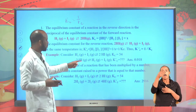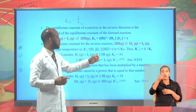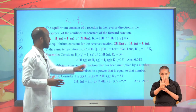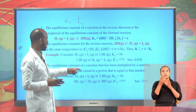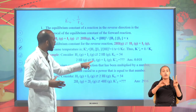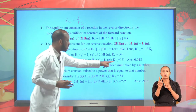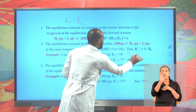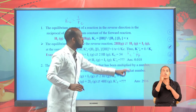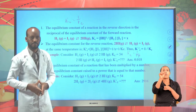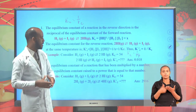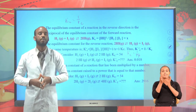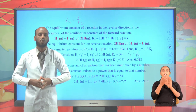For hydrogen gas plus I2 gas in equilibrium with hydrogen iodide gas, KC is 54. When this reaction is reversed to give 2 hydrogen iodide gas in equilibrium with hydrogen gas plus I2 gas, the new K prime C equals 1 over 54, which is 0.018. From this, we observe that the form of equation which describes the equilibrium affects the equilibrium constant KC.